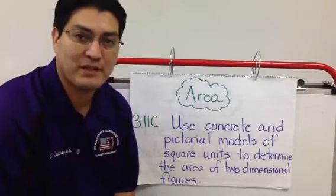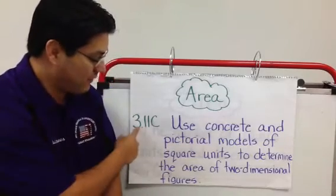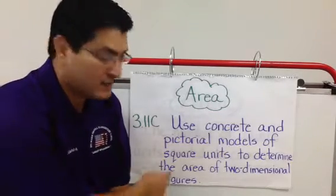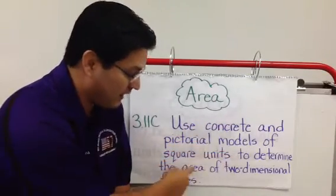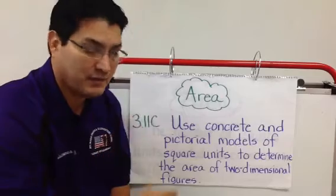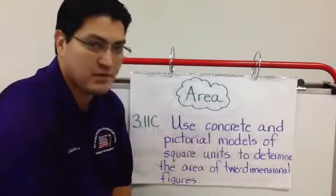Hello students. Today we will be learning about area. In the TEKS, area is 3.11c. It is the use of concrete and pictorial models of square units to determine the area of two-dimensional figures. We're going to be focusing more on the pictorial models, the pictures.